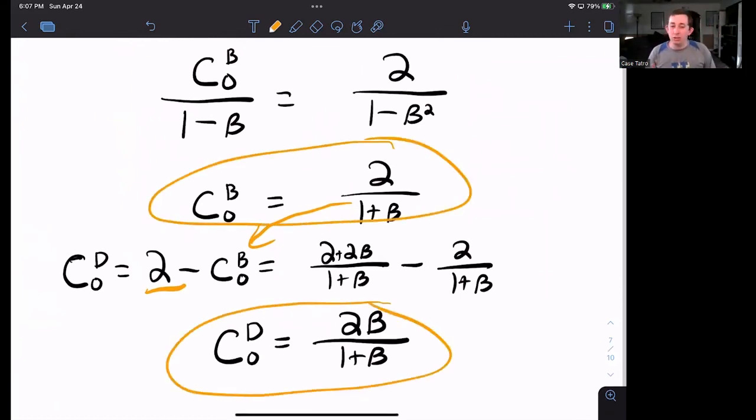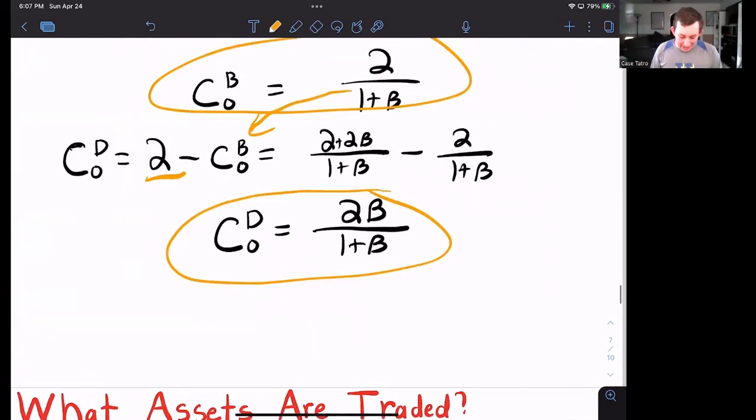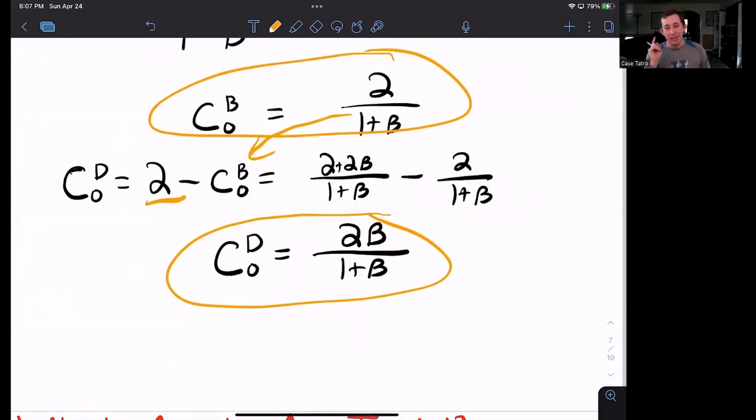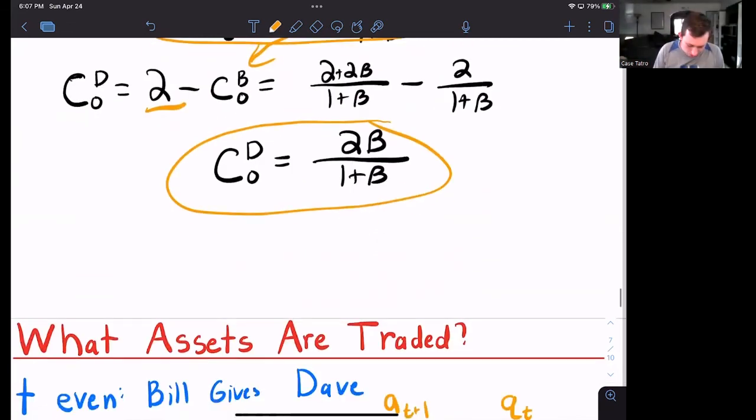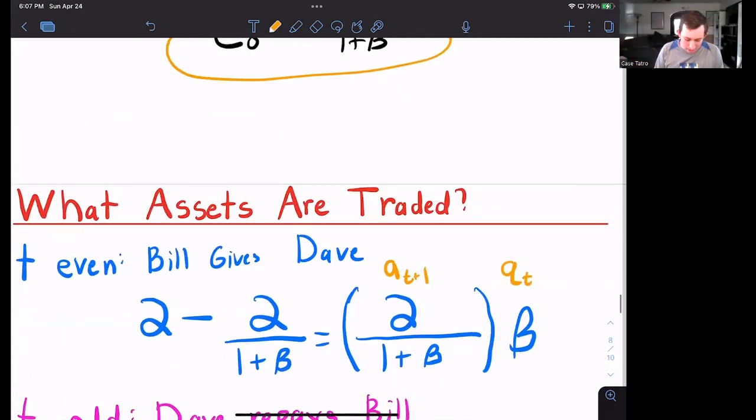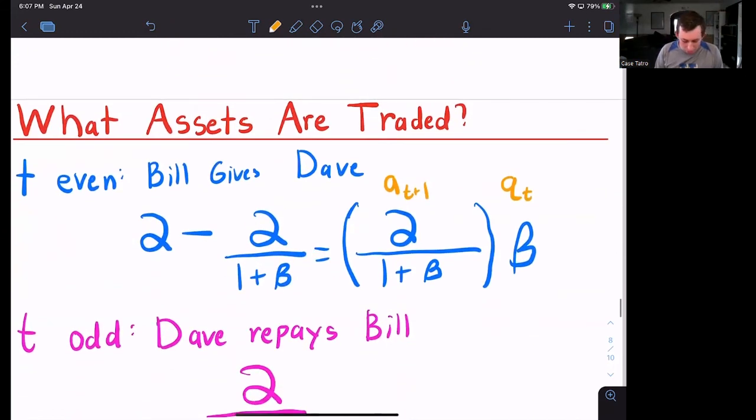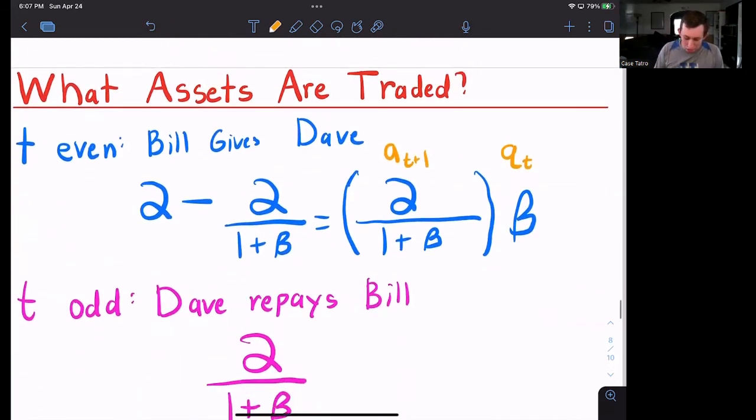But notice that we also need to find out what the assets are. So what is actually being traded, because that is part of the sequential market equilibrium. So what is happening? Well, I know that in even periods, if Bill is getting two coconuts, Dave is getting nothing. Whatever Dave is eating in even periods must be whatever he borrowed from Bill that day. So in the odd periods, Bill gives Dave, you know, two minus two over one plus beta, which is just two over one plus beta times beta, where this is the actual asset that's being traded. And this was the price of that asset that we saw before.